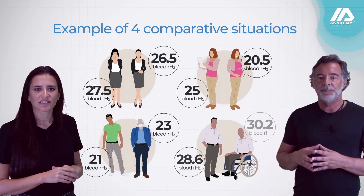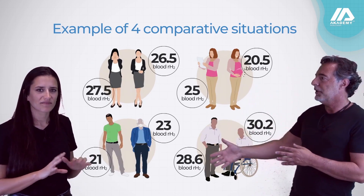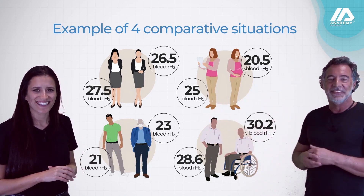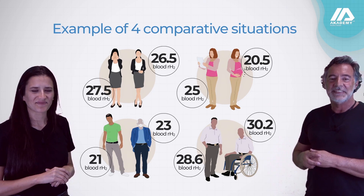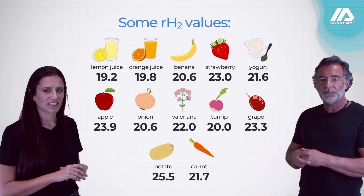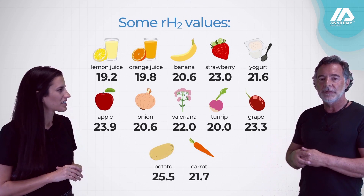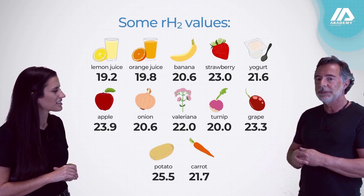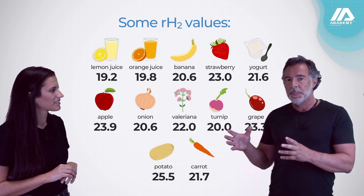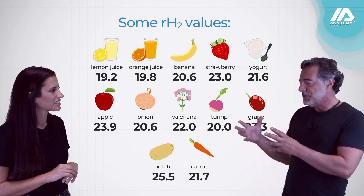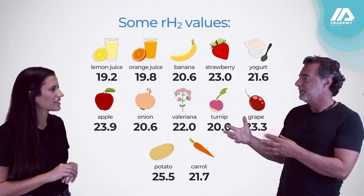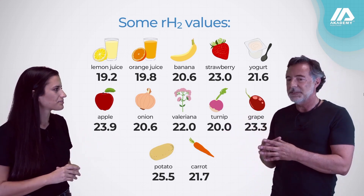So we also have a family example — you can see what happens to an entire family with different RH2 situations. And what about food? As you remember, when we talk about pH, all food is slightly acidic.